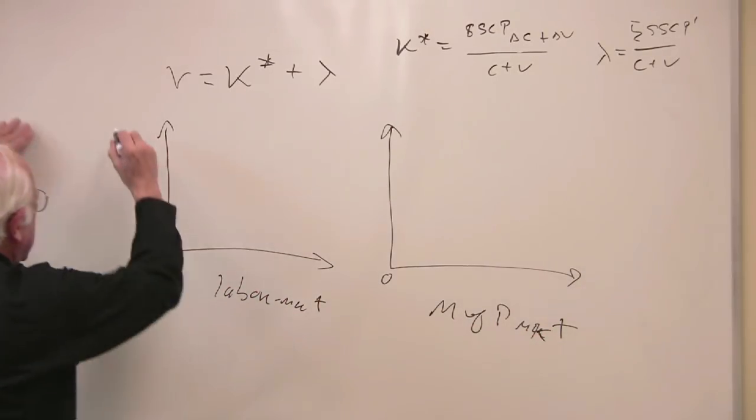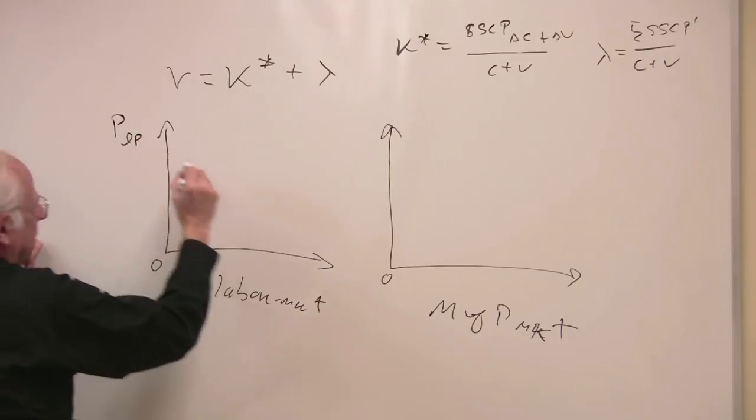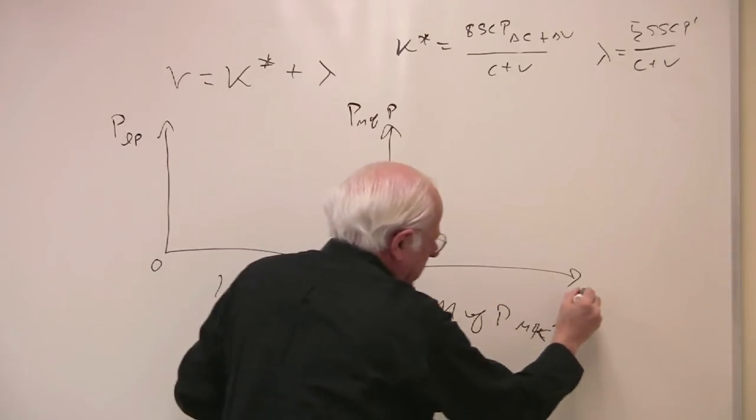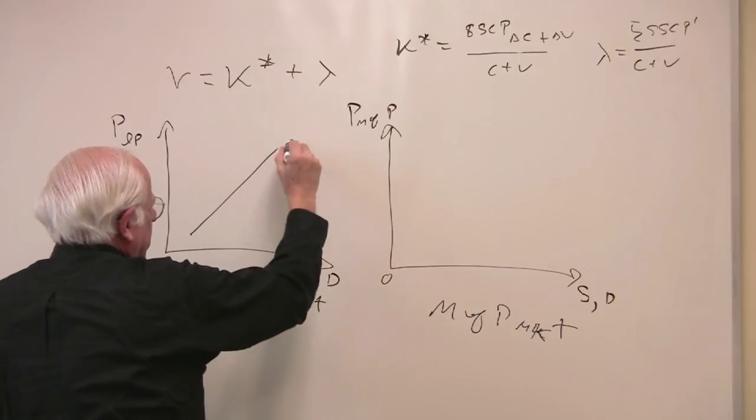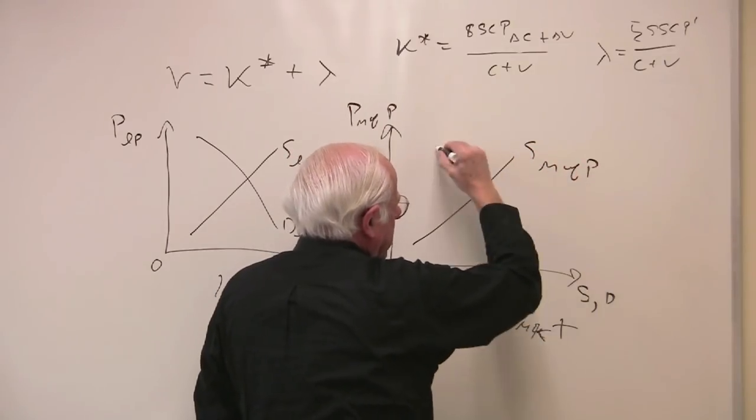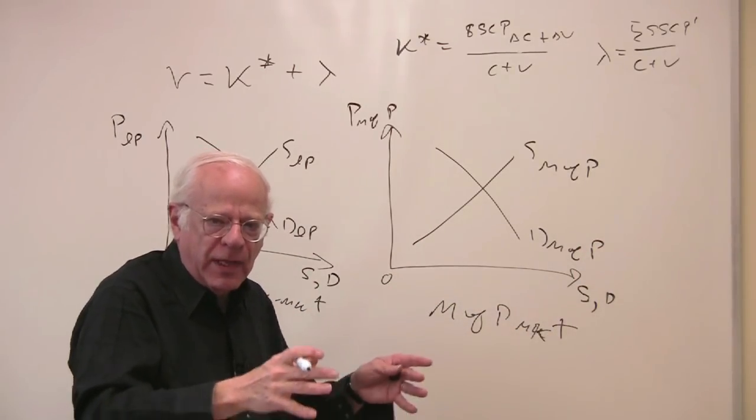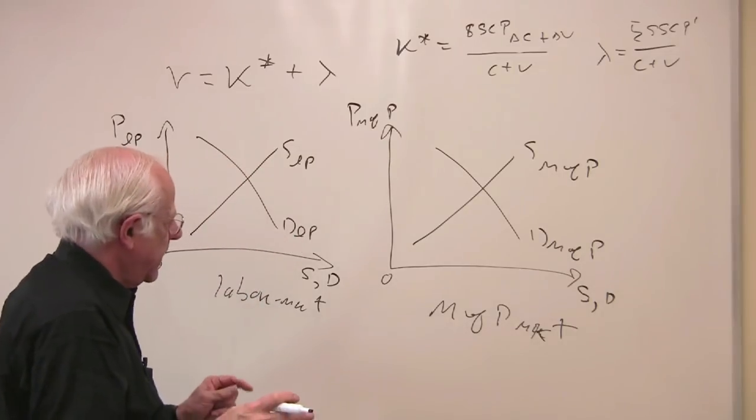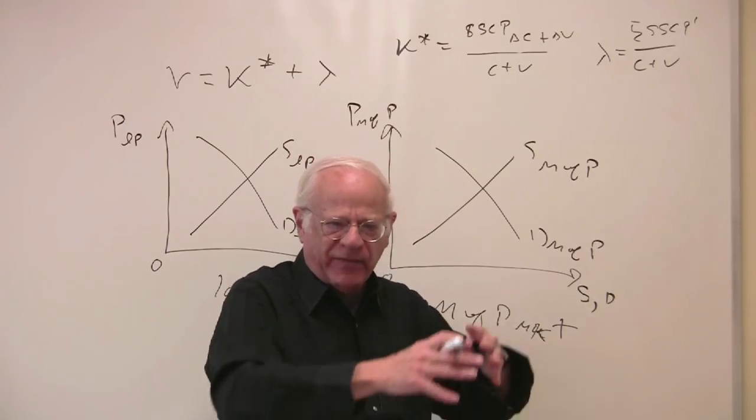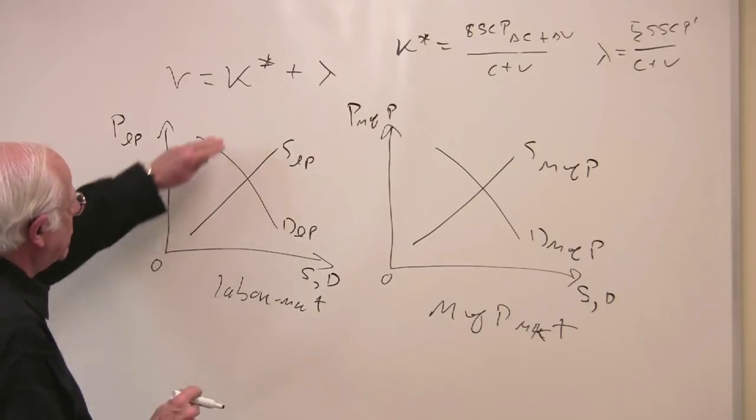So what I have here is the graph of a market. First one will be the labor market, means of production market. If it's a market, we're concerned with prices. So here I'm going to put the price of labor power, price of means of production, and of course the supply and demand over here and supply and demand over here. Supply of labor power, demand for labor power, supply of means of production, demand.